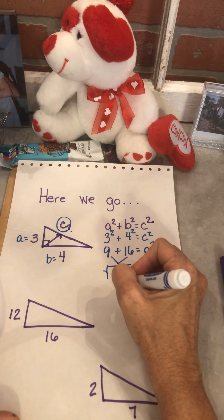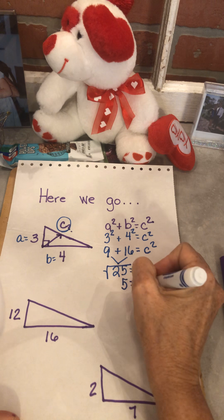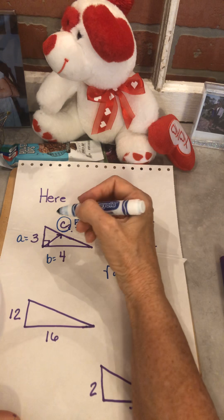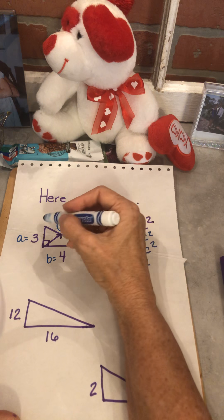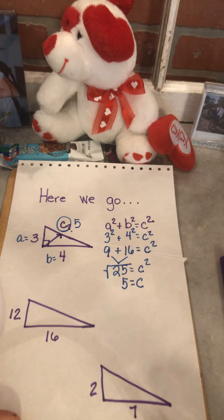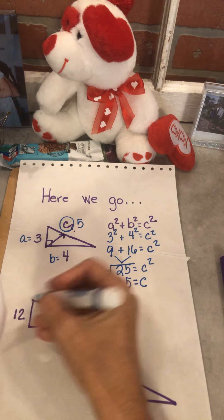So I'm saying to myself, what times what gives me 25? And hopefully you said 5. So this is 5. Now let's do our check. Hypotenuse is always my biggest measurement. Is this the biggest side? I have a 3, a 4. Yep, 5 is the biggest. Okay, let's do this one.